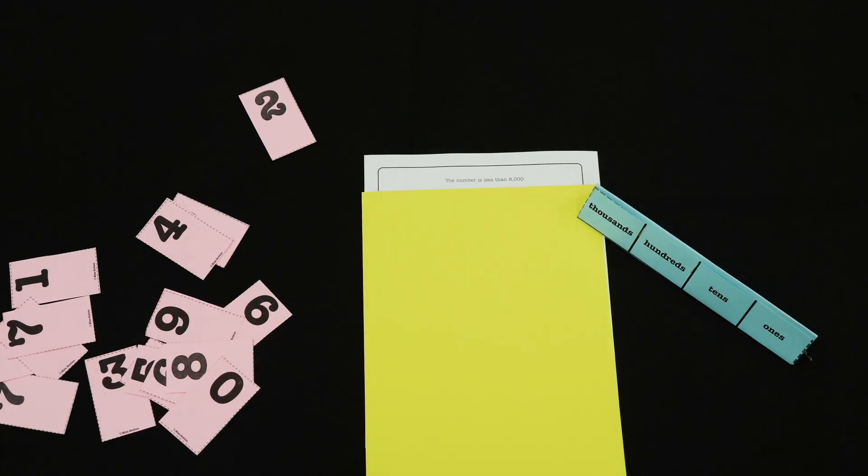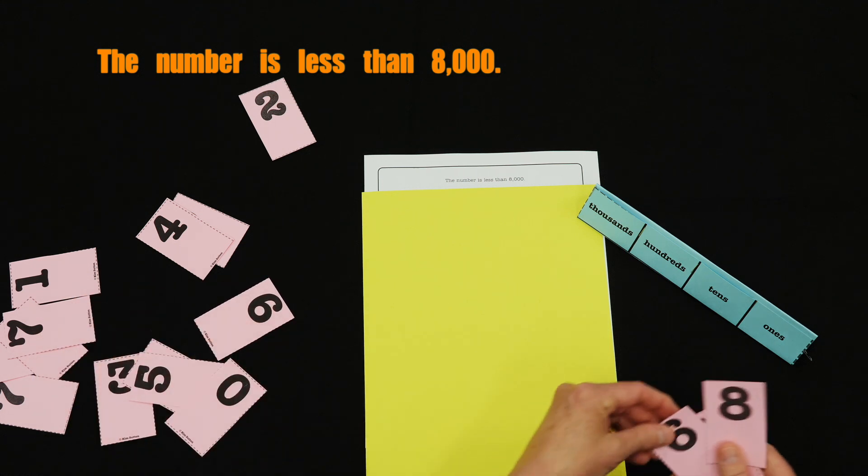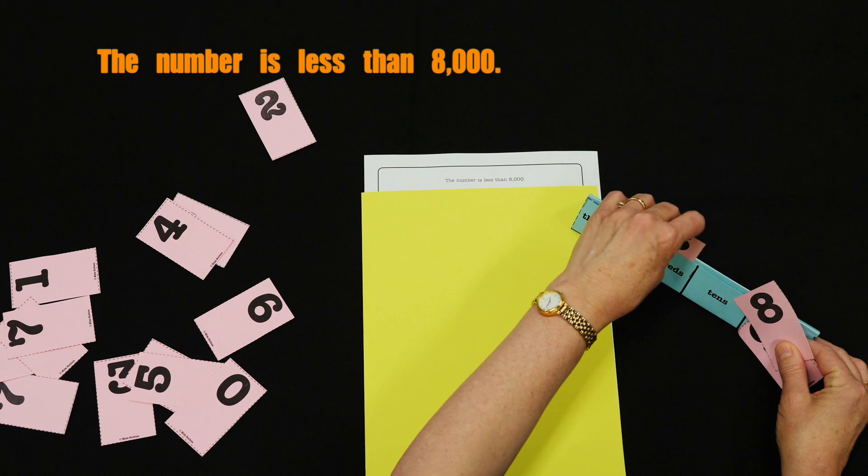Here's a set of place value clues for upper grades. First clue is the number is less than 8,000. Child's thinking, well, I could have a four digit number, I could have a three digit number, I could have a two digit number, even a one digit number. All of those would be right answers because that's the only information I know about the number. So the child builds the number.